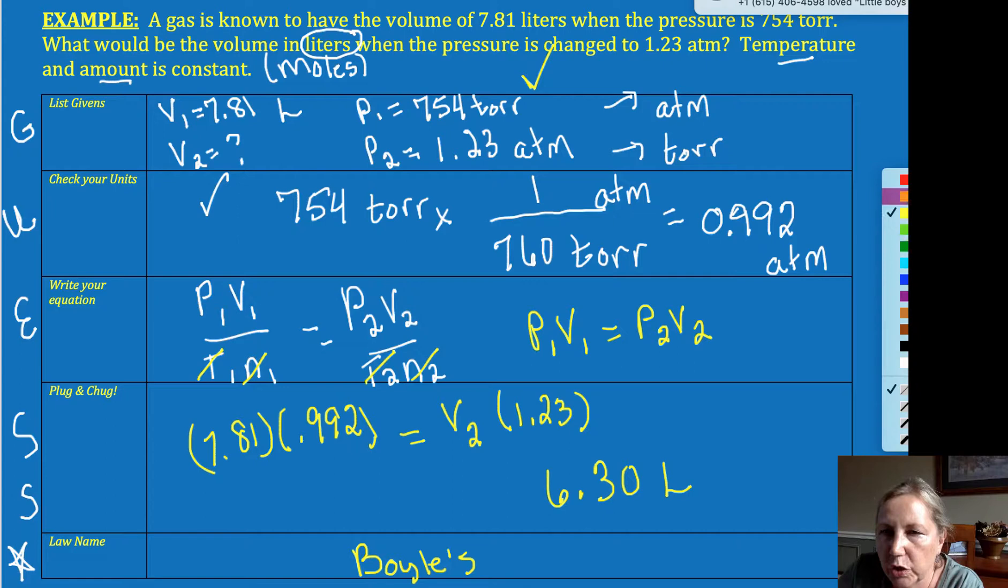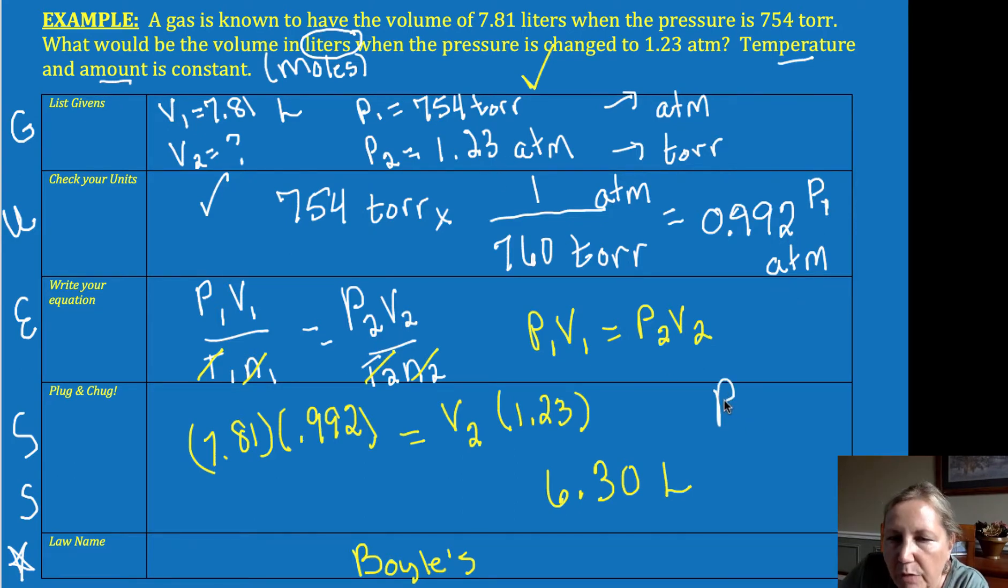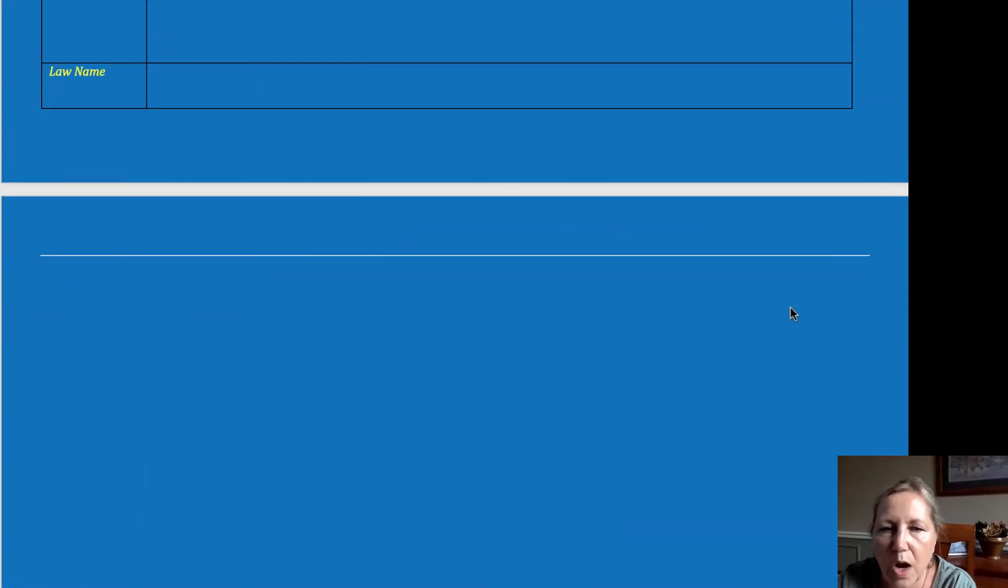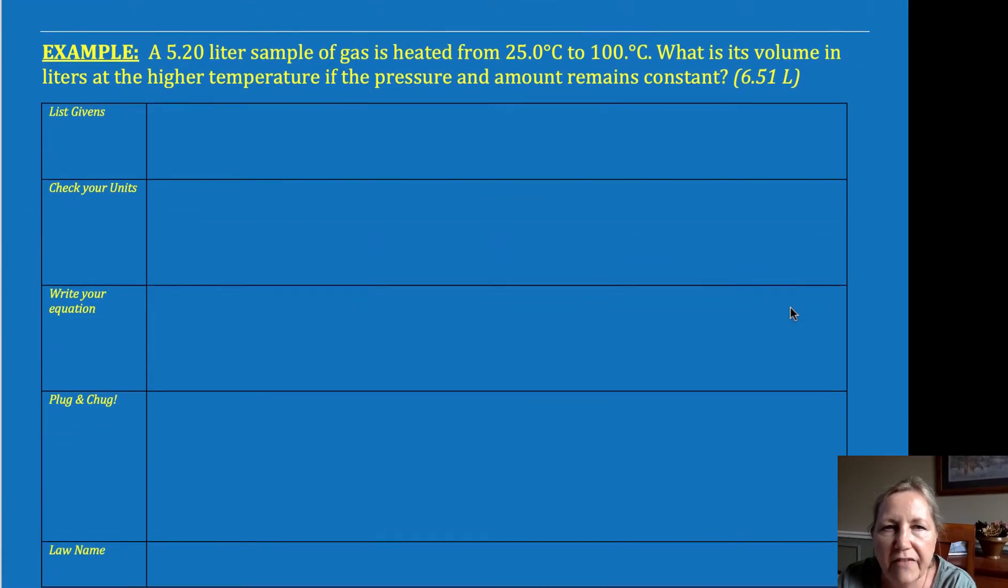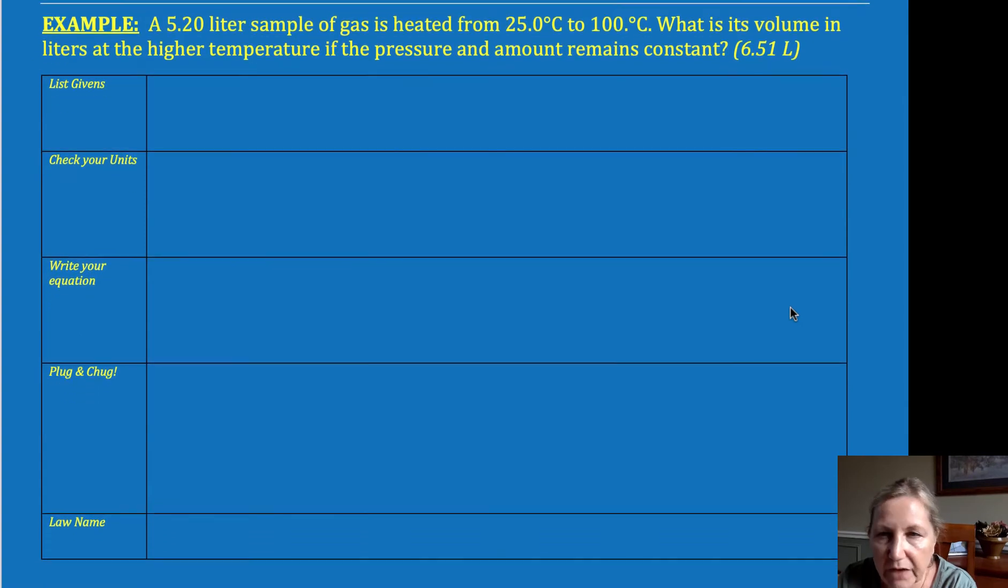Now I encourage you before you walk away from this problem, so to speak, to think about it logically. Let's look at what happened. We went from 0.992—remember that's P1—we went from 0.992 to 1.23. So our pressure increased, we would expect our volume to decrease, and it did. It decreased from 7.81 liters to 6.30 liters. It's a good way to check that maybe you did your math correctly there.